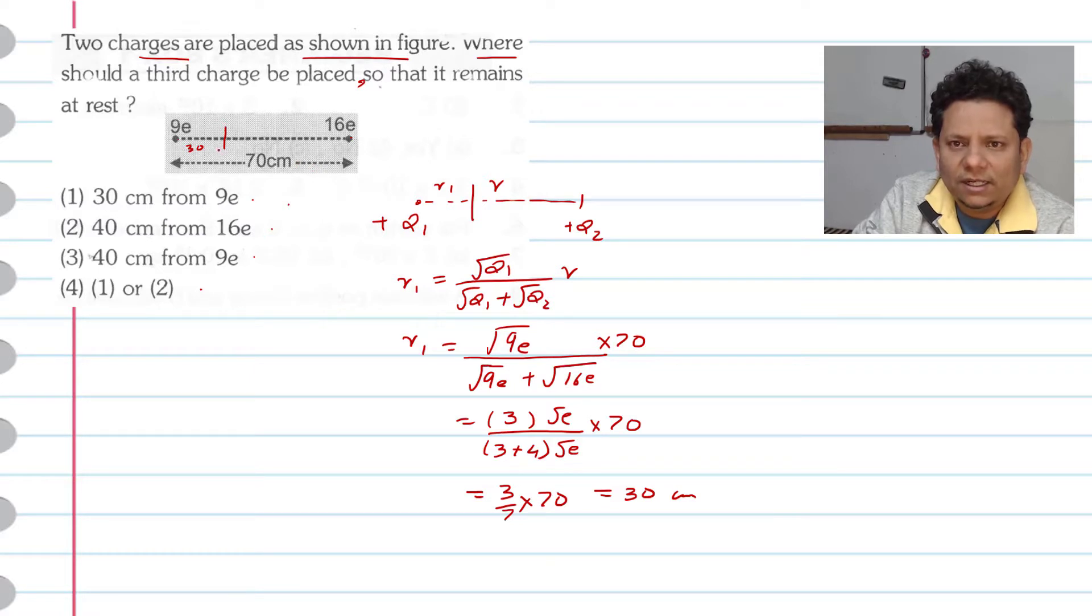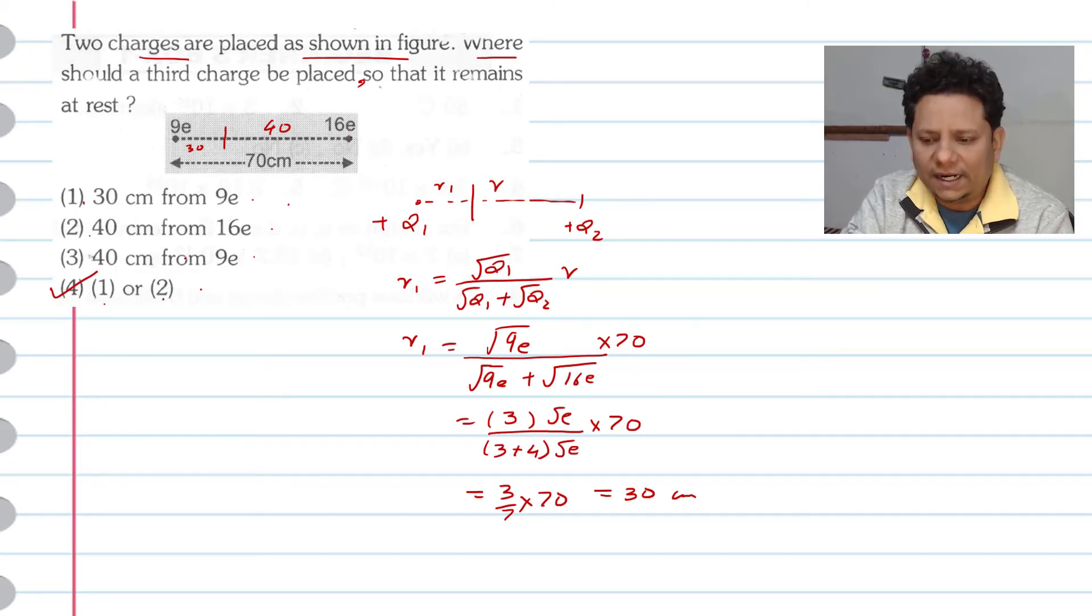Now if the total is 70 and we got 30, then this equals 40 cm. Hence both options 1 and 2 are right. Since we have to select a single choice option here, option number 4 which says 1 and 2, that will be the right answer.